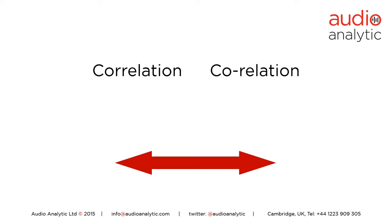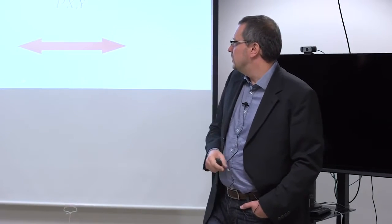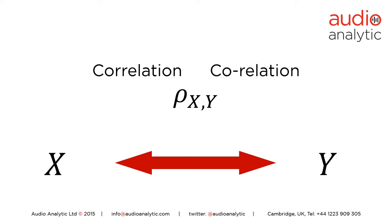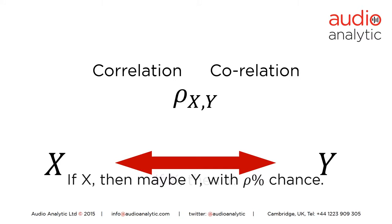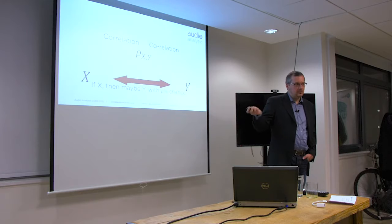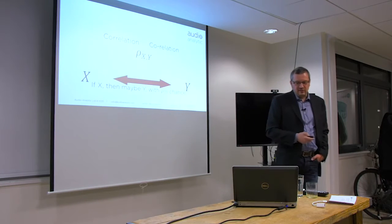One of the tools we use is correlation, or co-relation — the relationship between two types of data quantities. That's about as much math as you're going to get in this talk. The Greek letter rho of x and y is the relation between x and y, two different quantities of data. At the simplest level, you might uncover relations: if x, then y. Sometimes it's not clear-cut — if x, then maybe y with a rho percent chance that those things are related.